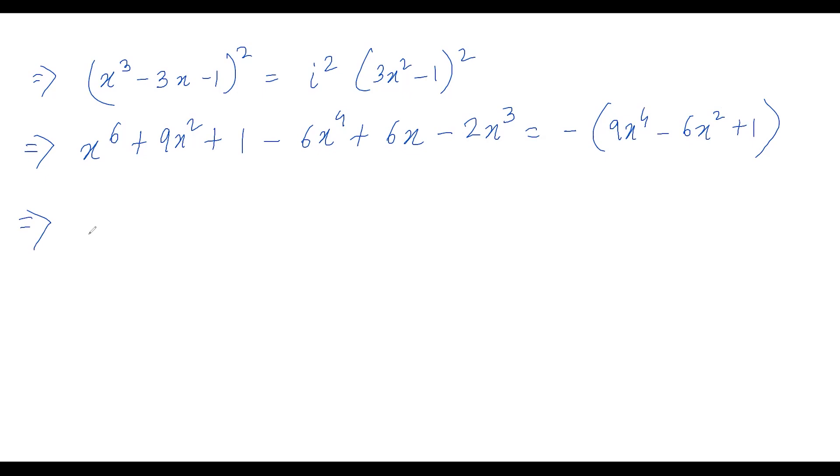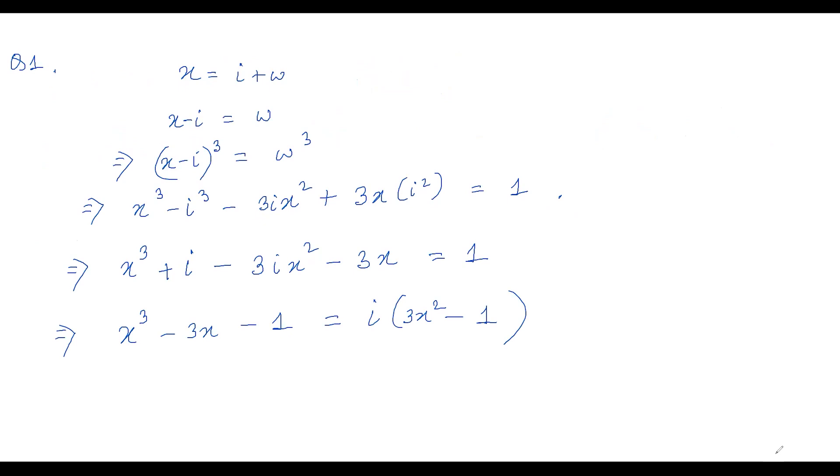everything on one side and simplify it out, you are going to get x to the power 6 plus 3x to the power 4 minus 2x cube plus 3x squared plus 6x plus 2 equals to 0. And so this is your required polynomial, and it has one of its roots to be i plus omega.